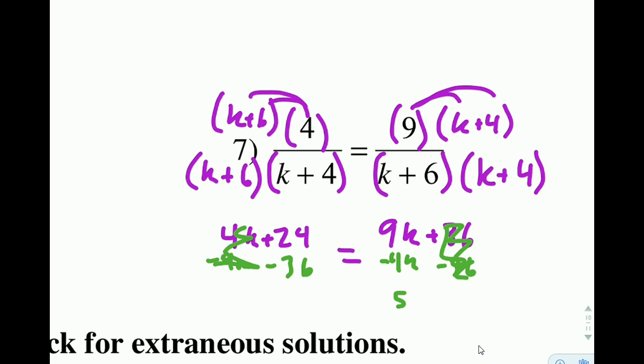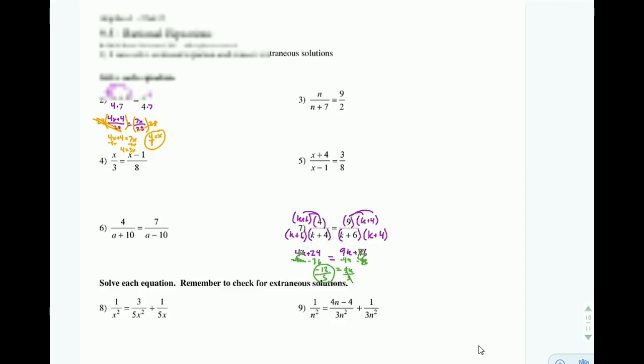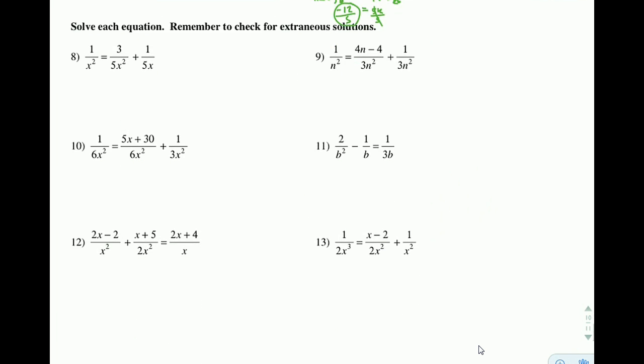I'm left with 5k is equal to negative 12. Divide both sides by 5. And I get negative 5 twelfths or negative 12 fifths as my answer for k. I'll have a new video for the problems on the bottom.